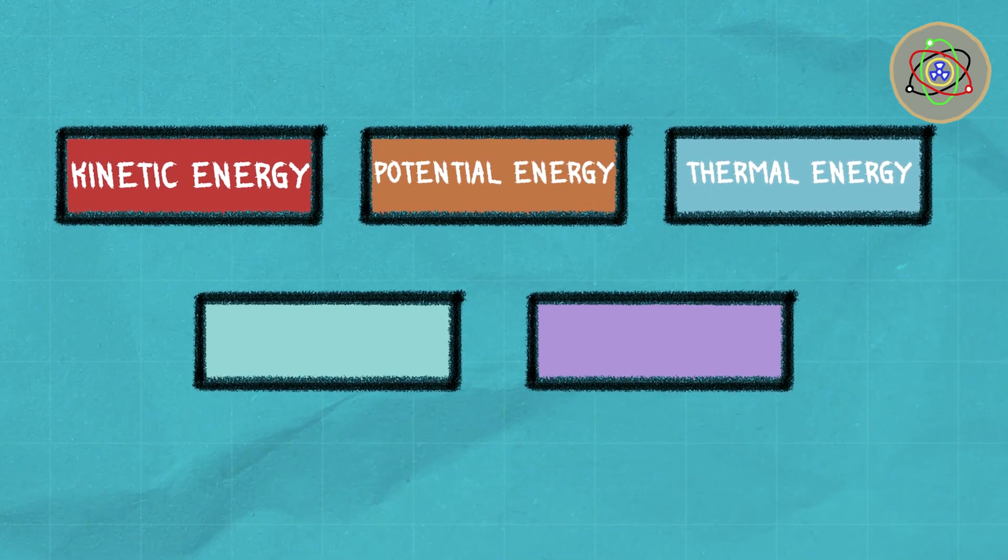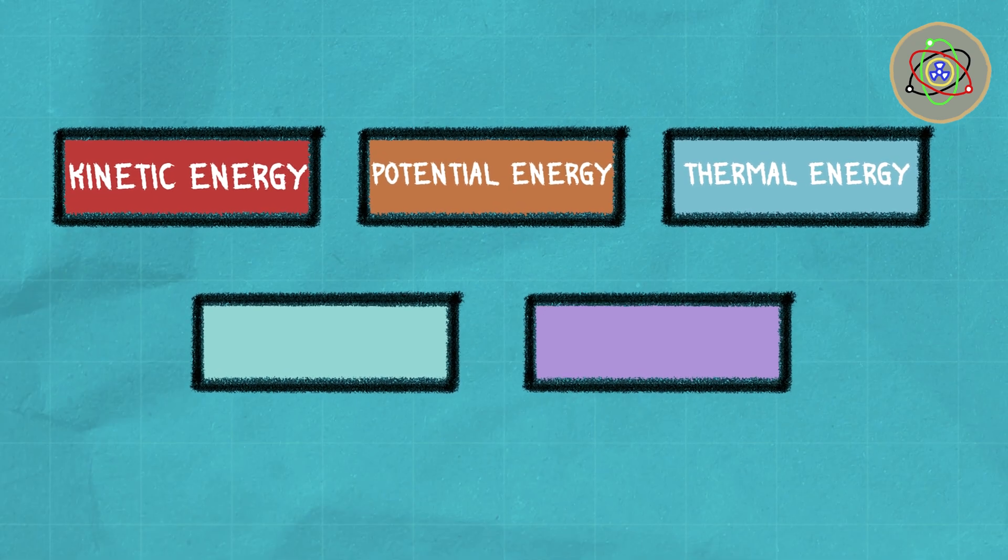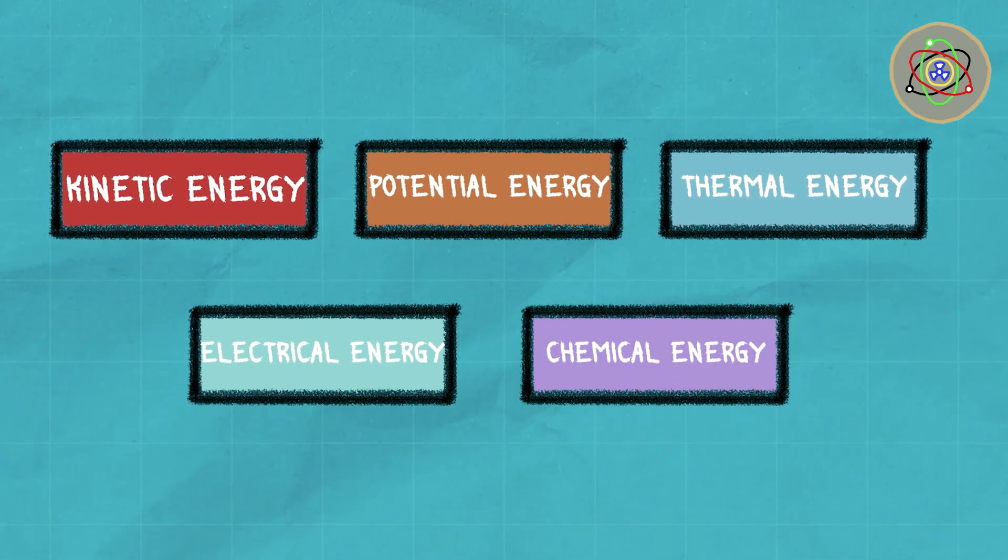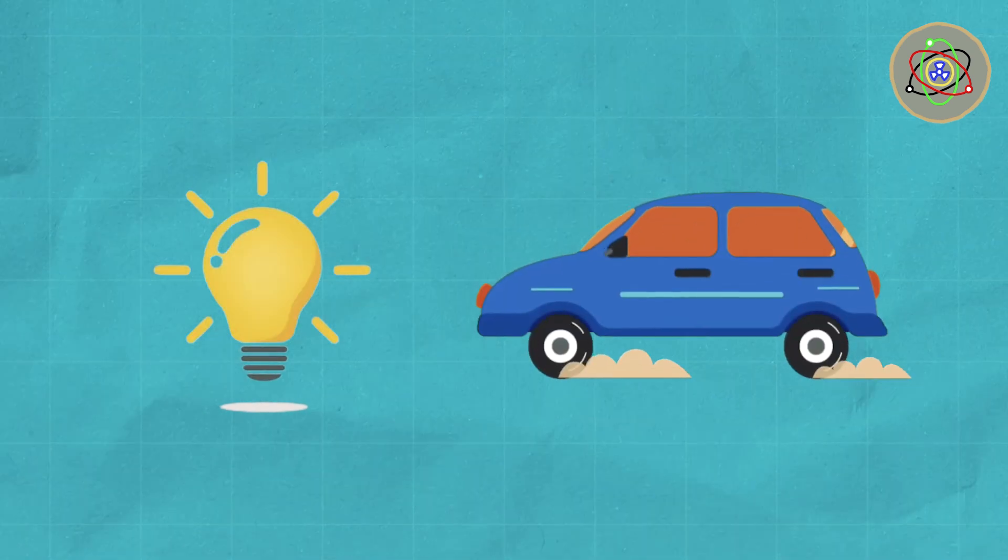There's also thermal energy, the heat that makes things jiggle. And let's not forget the powerhouses, electrical energy and chemical energy. These guys keep our lights on and our cars running.